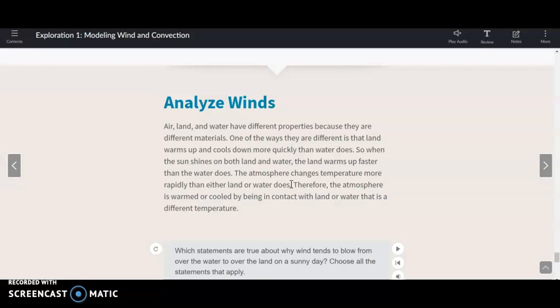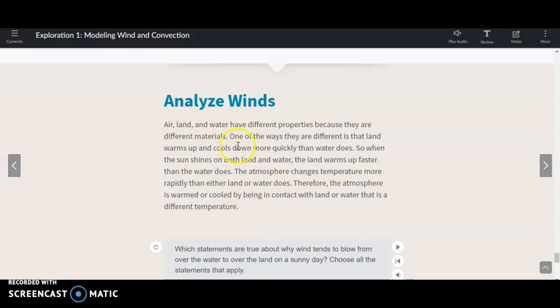And the sun hits the sand. And what happens is the sand acts like a stove. Goes ahead and warms up that air right above it. And the water acts like an ice pack that you put on your forehead. It goes ahead and cools the air down. Now, therefore, therefore, let's see what it's there for. The atmosphere is warmed or cooled by being in contact with land or water. That is, different temperatures. Wow, that is amazing. Thing to remember here for what's coming up is that the air over water is cooler during the day. That's important.